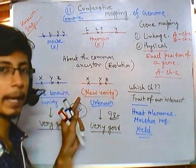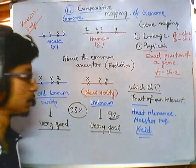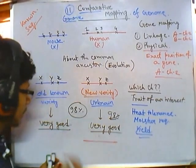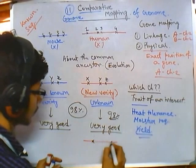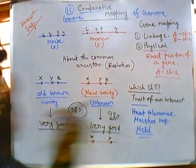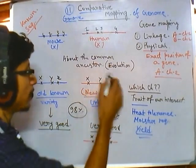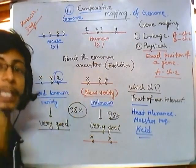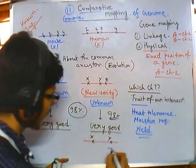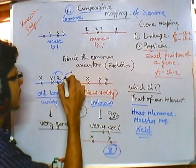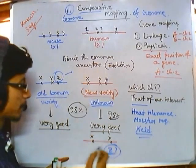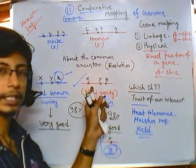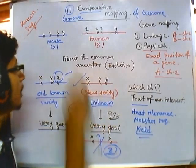That's the practical application of comparative genome mapping. Suppose another new variety has genes X and Y but no gene Z. We can tell that this variety is missing one important gene, which means an important trait will be hampered. So we won't choose this variety; instead we choose the one that has all the necessary trait-encoding genes X, Y, and Z.